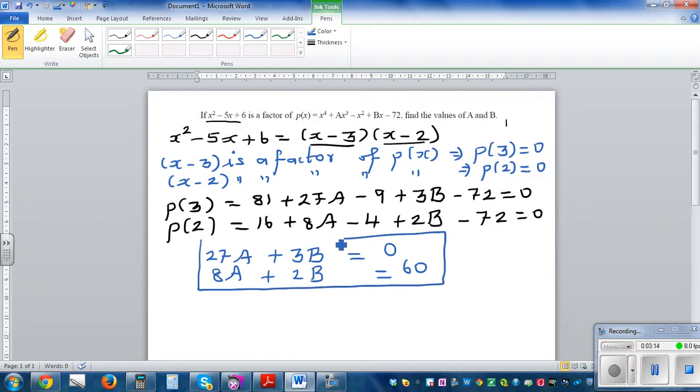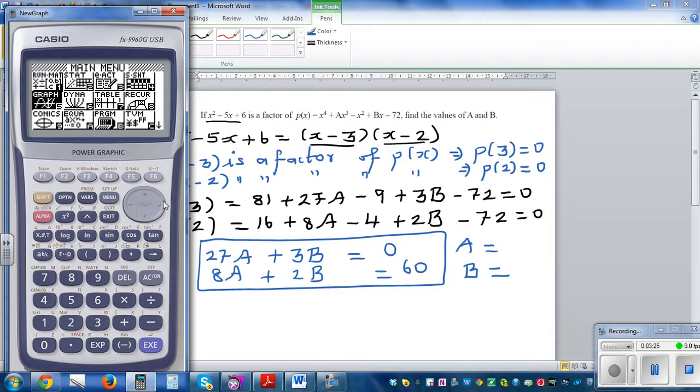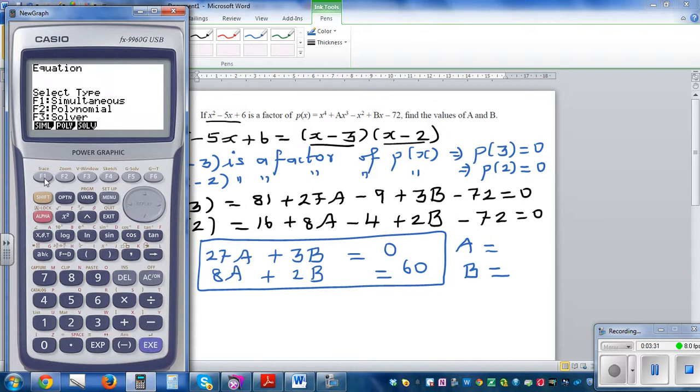Now you just solve this. If you solve for A and B using a calculator, you can go to simultaneous equations. Go to equation, simultaneous with two unknowns.